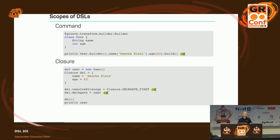The next scope level is the closure scope — everything inside of a closure, like name 'Sasha' and age 43. This DSL code, from the outside, is translated into a user object. You get a new user object, the closure gets the delegate — the user as delegate — with the resolve strategy set to delegate first, and then the closure runs. Automatically all the values land in the user object, and your user is completely filled.